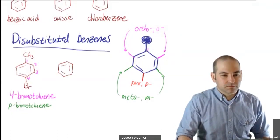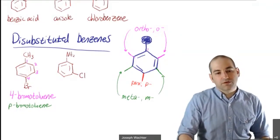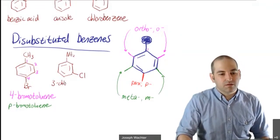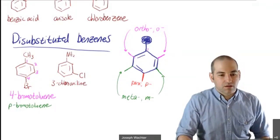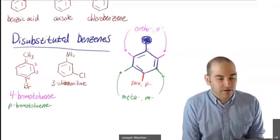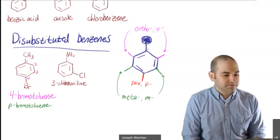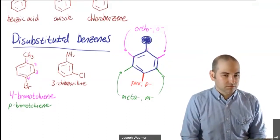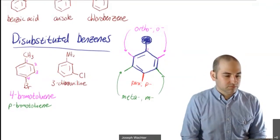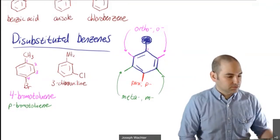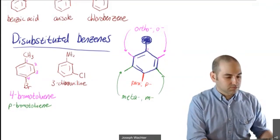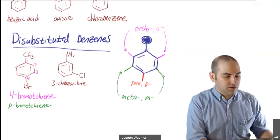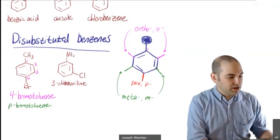Looking at another example: this one we could call 3-chloroaniline. Can anybody give the alternative name? That's right — meta-chloroaniline. So we could call that one meta instead. Ortho, meta, para — this only works for disubstituted benzenes with two things, because once you have more than two substituents you don't have a single meta-para relationship anymore.